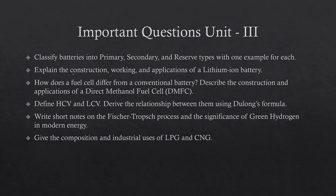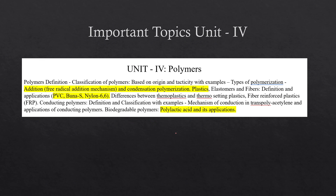Check the construction and working principle of the lithium-ion battery and the direct methanol fuel cell. Let me know in the comments: what is the full form of HCV and LCV? Derive the relationship between them using Dulong's formula. For the Fischer-Tropsch process, if asked for two marks write just the process; if asked for five marks, explain in detail. Also state the composition and industrial uses of LPG and CNG — for example, LPG is used for domestic purposes and CNG for transportation systems.